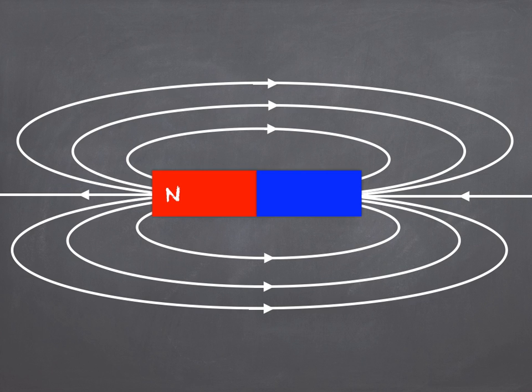Notice the arrows as well. On the flux lines, there are always arrows pointing from north to south along the line. And these show the direction that a north pole would be pushed by the magnetic field.